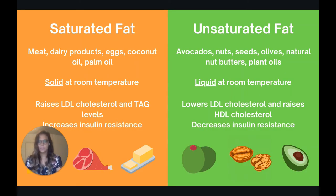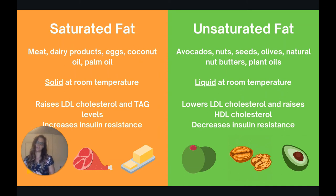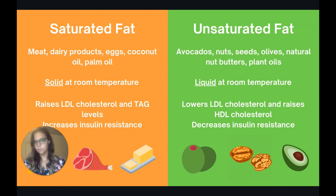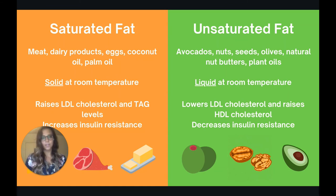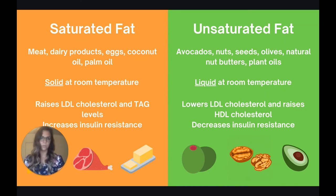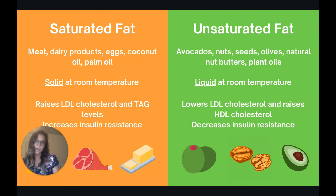Here's a picture to help tie it all together. Saturated fat mainly comes from animal products — meat, dairy, eggs — but coconut oil and palm oil, which are plant sources, also contain saturated fat. One way to tell the difference: saturated fats are solid at room temperature, like a stick of butter or a jar of coconut oil. These raise LDL cholesterol and triglycerides and increase insulin resistance. Unsaturated fat comes from plant sources — avocados, nuts, seeds, olives, natural nut butters, and plant oils — and it is liquid at room temperature, like a bottle of olive oil. Unsaturated fats lower LDL cholesterol, raise HDL (the good cholesterol), and help decrease insulin resistance.